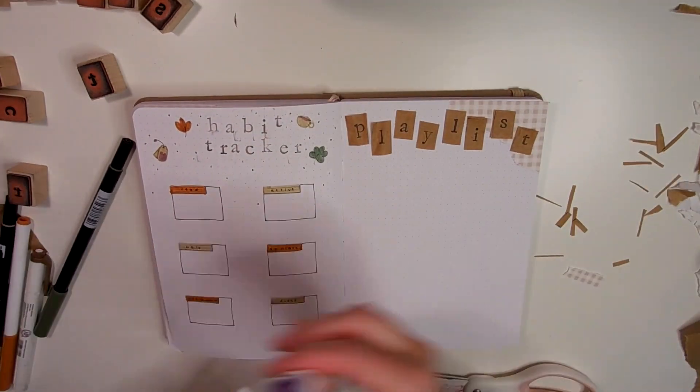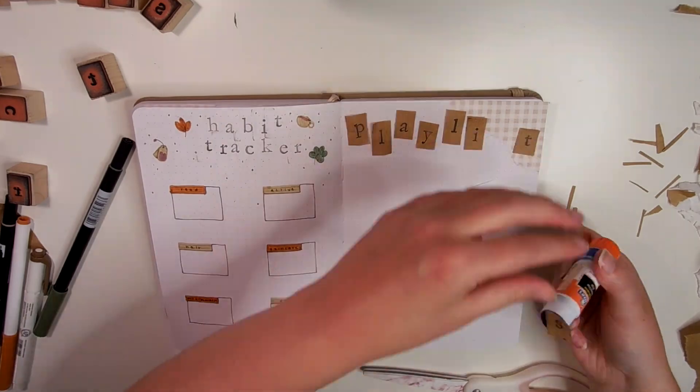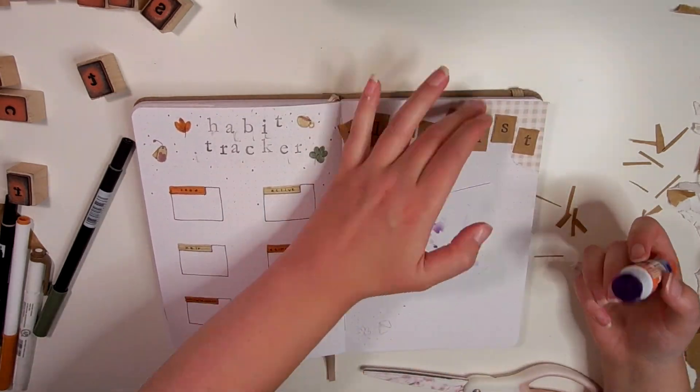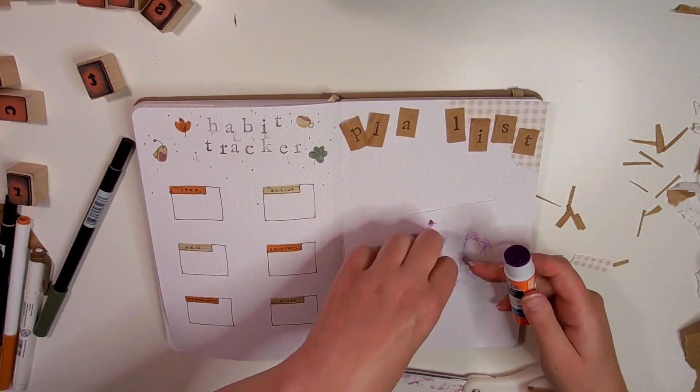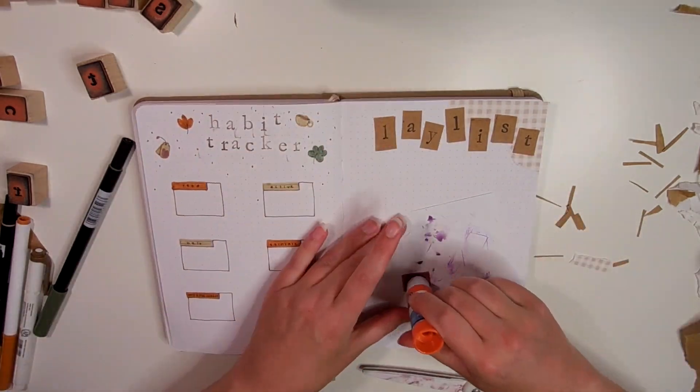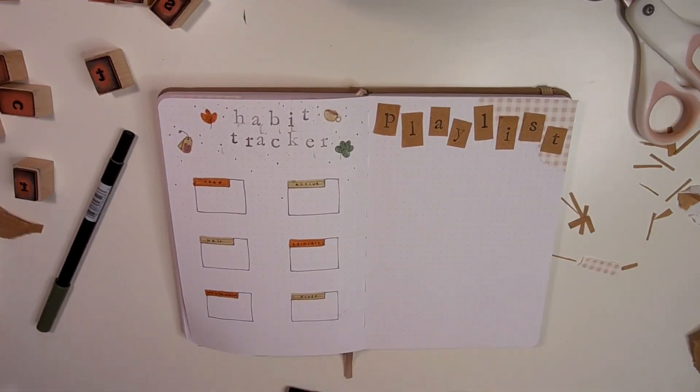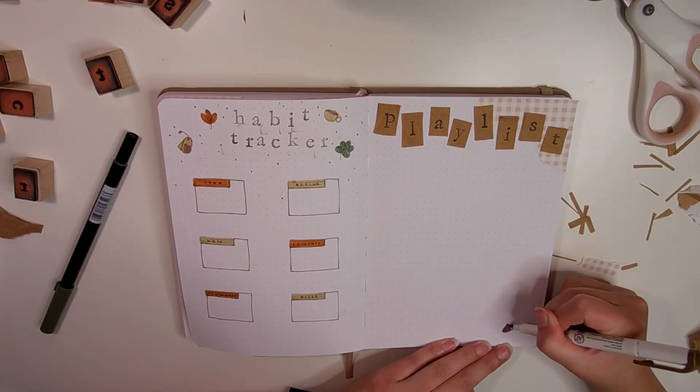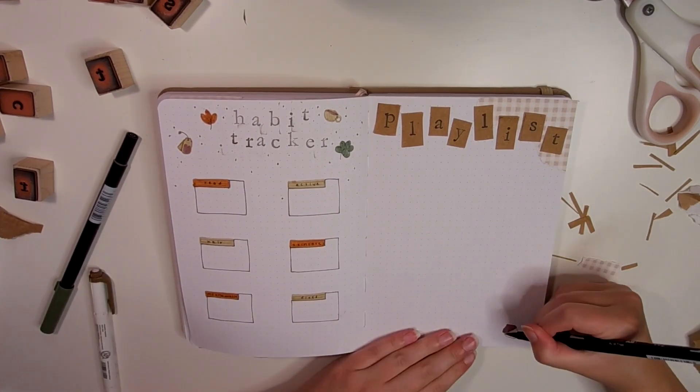I just love music, so it's always fun to look back on what I was listening to in specific months or times. I'm doing the title the same way as the calendar page—using stamps and individually cutting them out to scatter them across the top. I drew a little acorn and a leaf in the corner to add a little more detail but kept it pretty simple so I have plenty of space to write down all of the music.